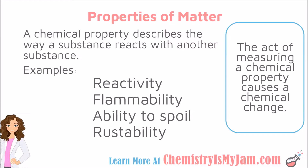A chemical property describes a way that a substance reacts with another substance. The very act of measuring a chemical property causes a chemical change, because you are measuring how something reacts with other things. Examples of chemical properties are reactivity, flammability, ability to spoil, and rustability.